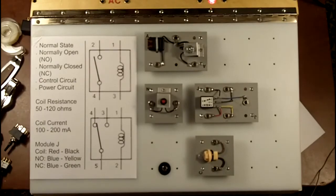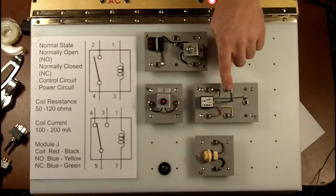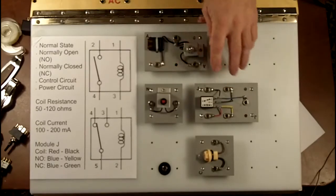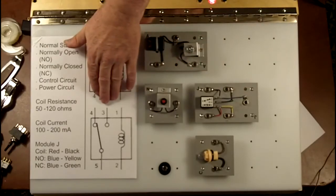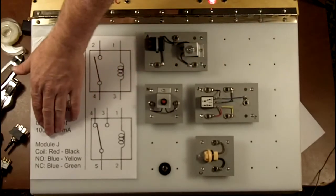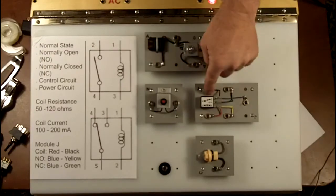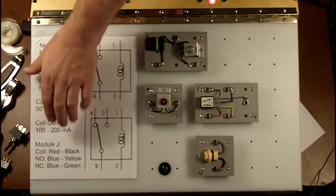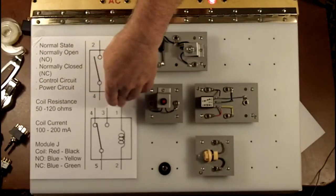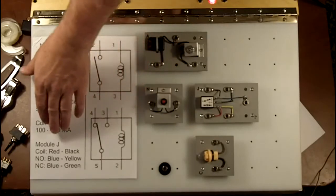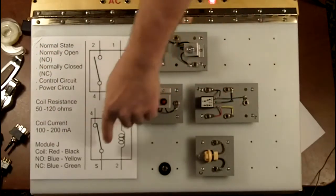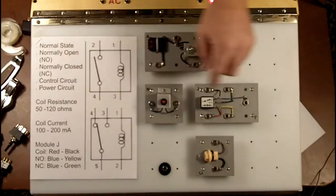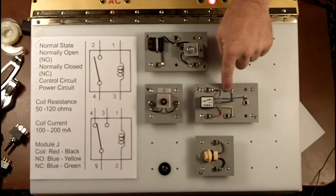So let's take and go to our lab here. This module or this trainer board uses J module as our 5-pin relay just like here. And down here I've identified that red and black are coil. Same thing here. One, two. And our blue wire is our same as five. So blue-yellow is normally open and blue-green is normally closed.